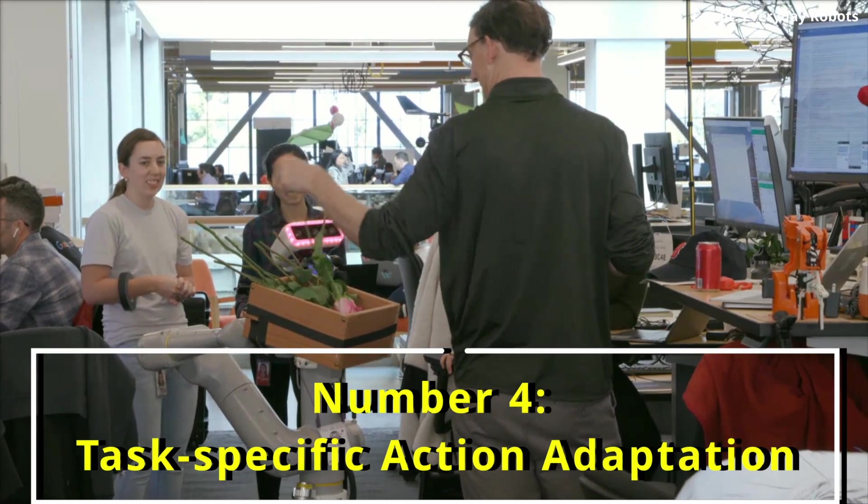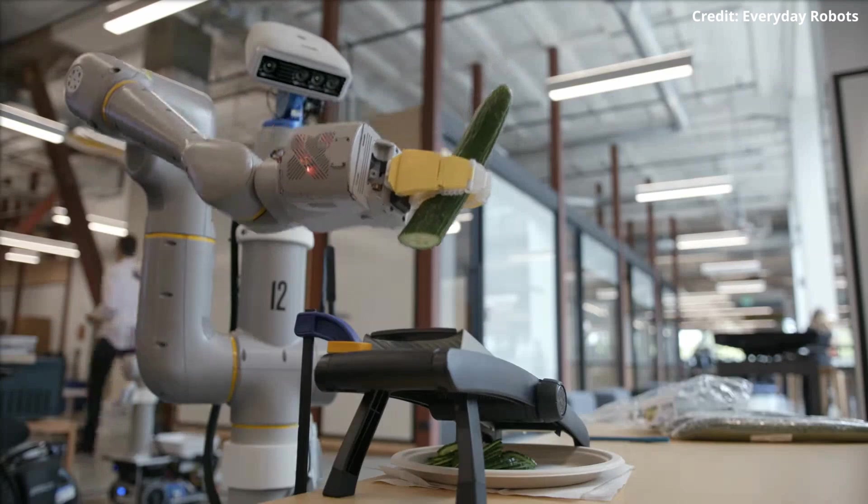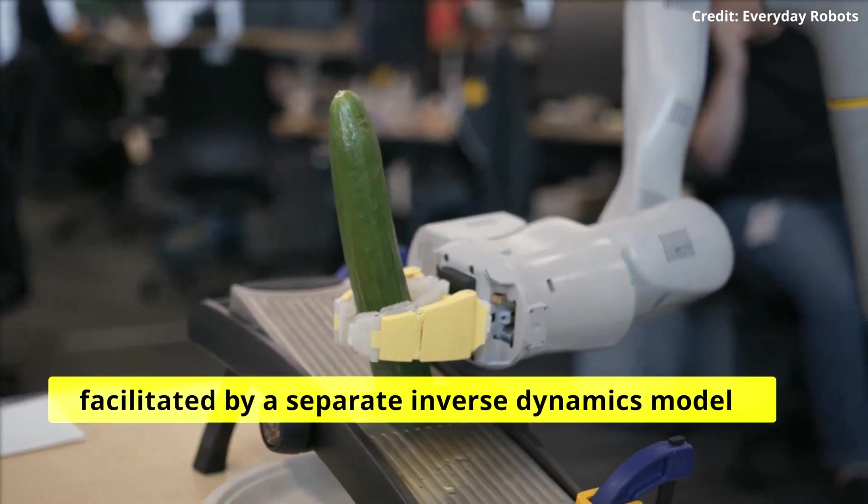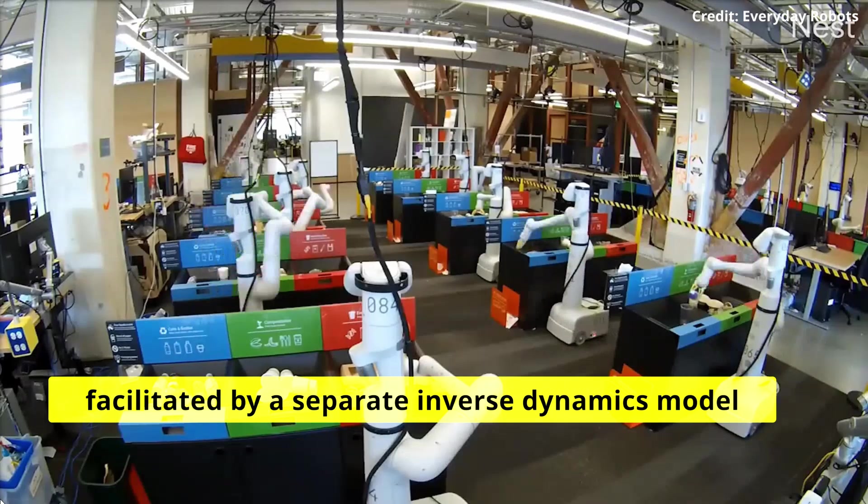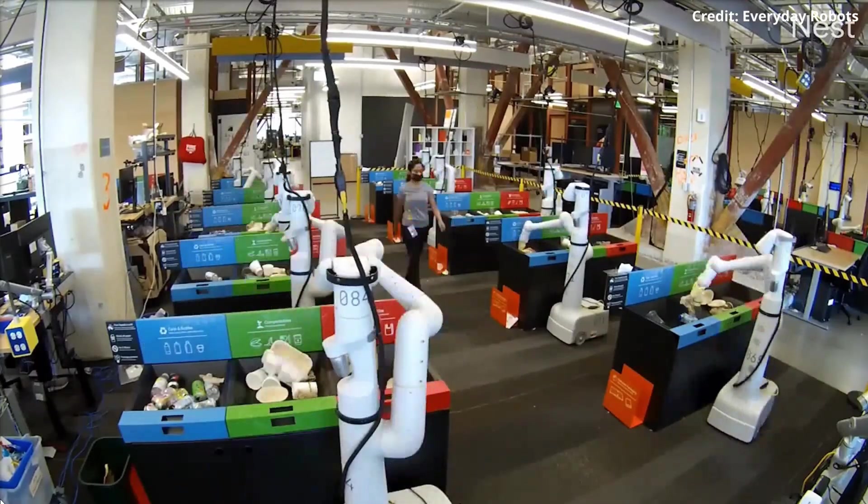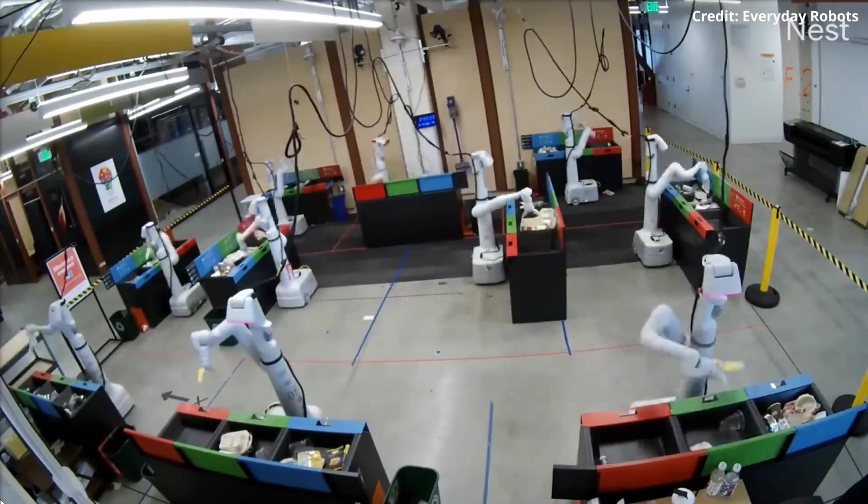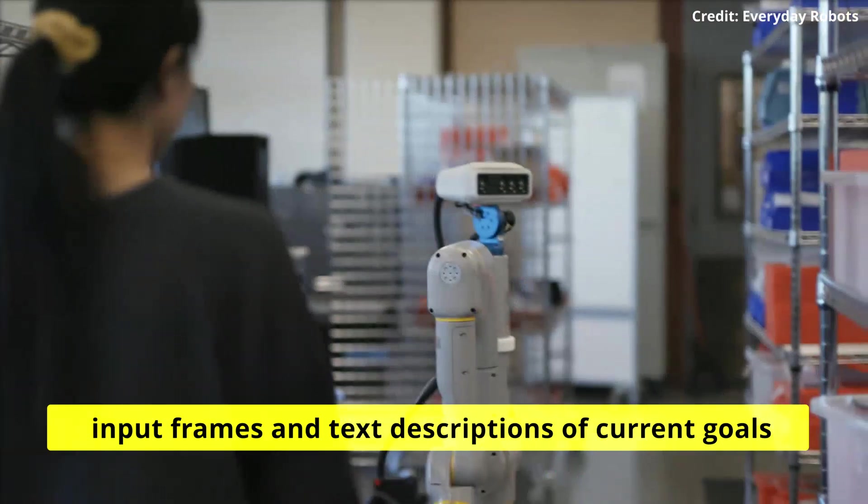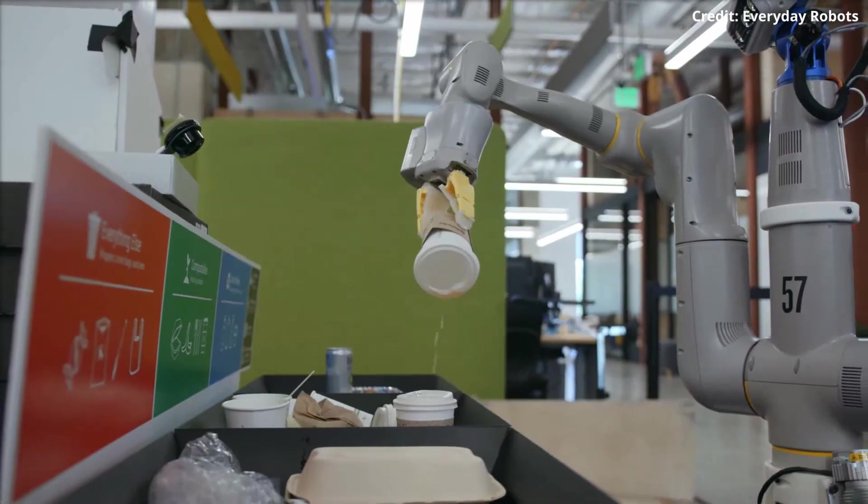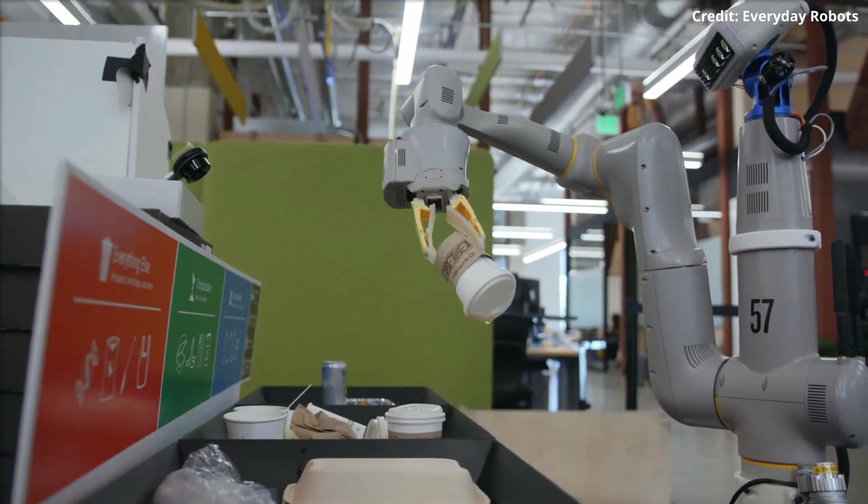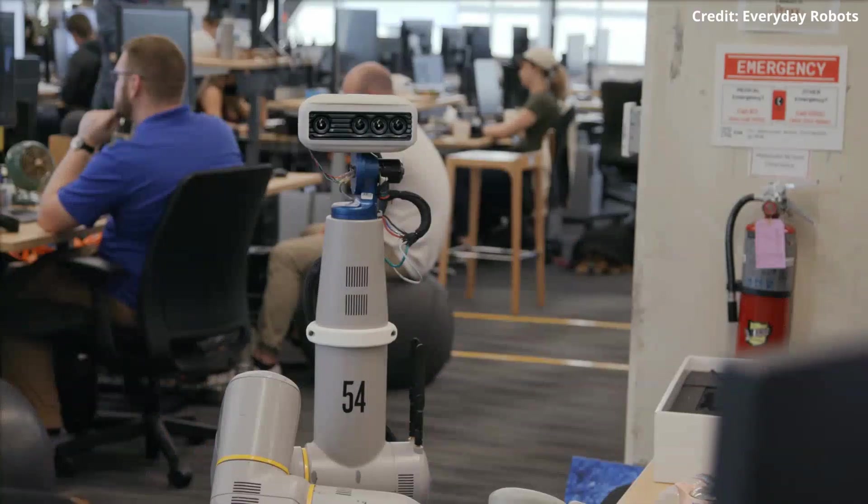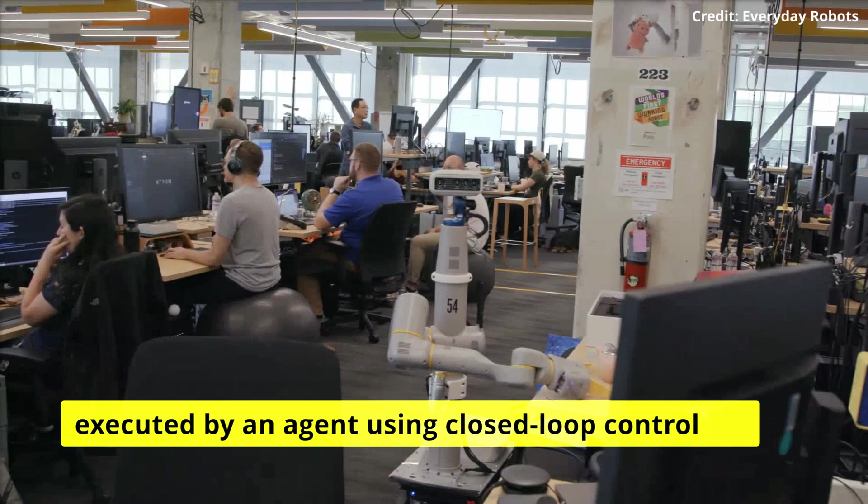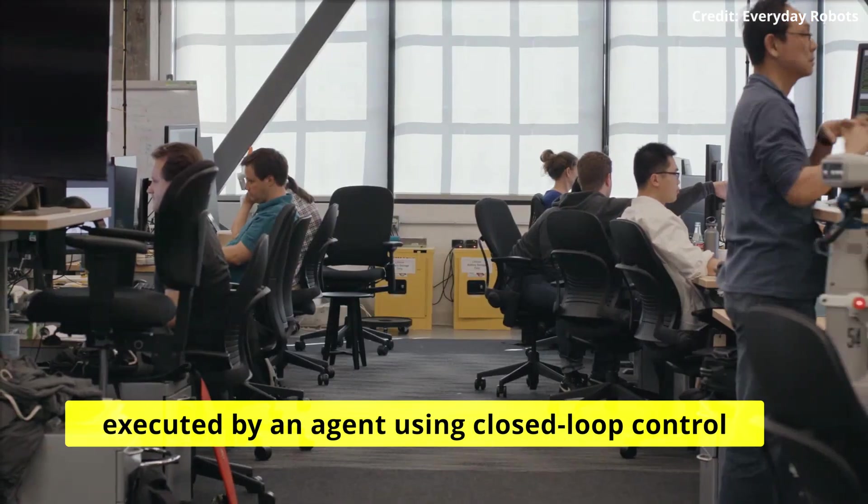Number four, task-specific action adaptation. This impressive feature is facilitated by a separate inverse dynamics model that translates video frames into low-level control actions. This model is fed the input frames and text descriptions of current goals, synthesizes the image frames, and generates a sequence of actions to predict future steps. These actions are then executed by an agent using closed-loop control.